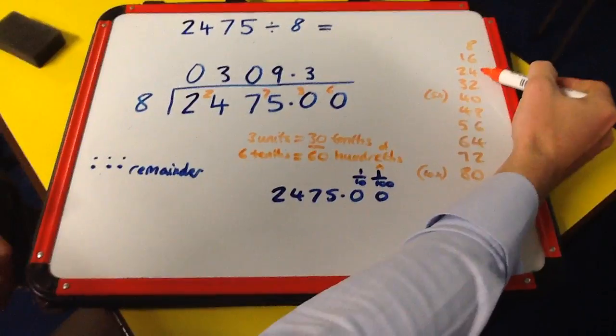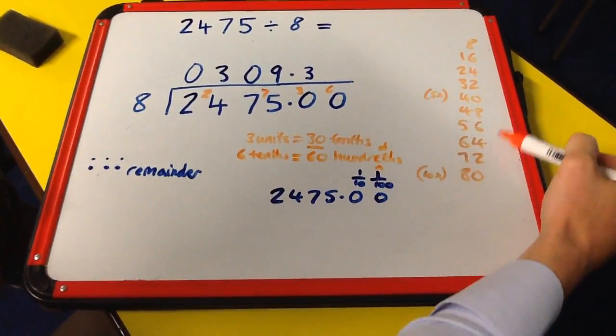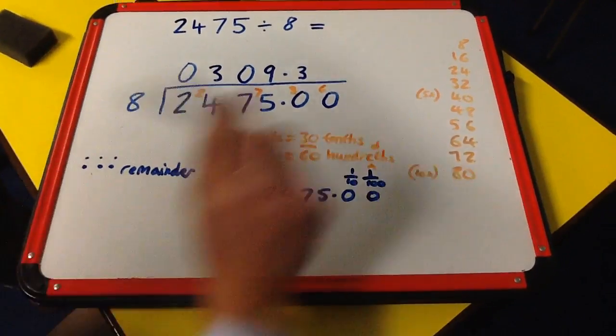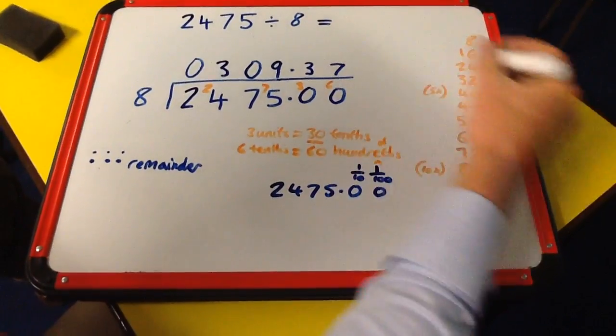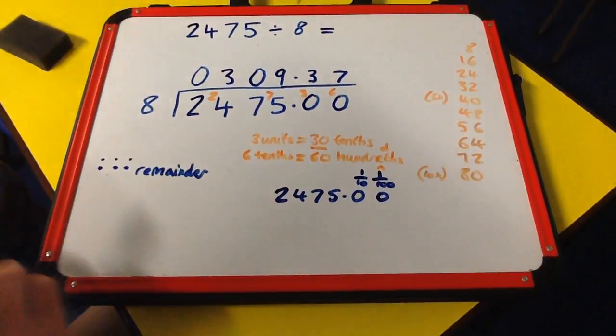8 into 60 goes 7 times. That's another remainder: 56 to 60 gives us remainder 4.